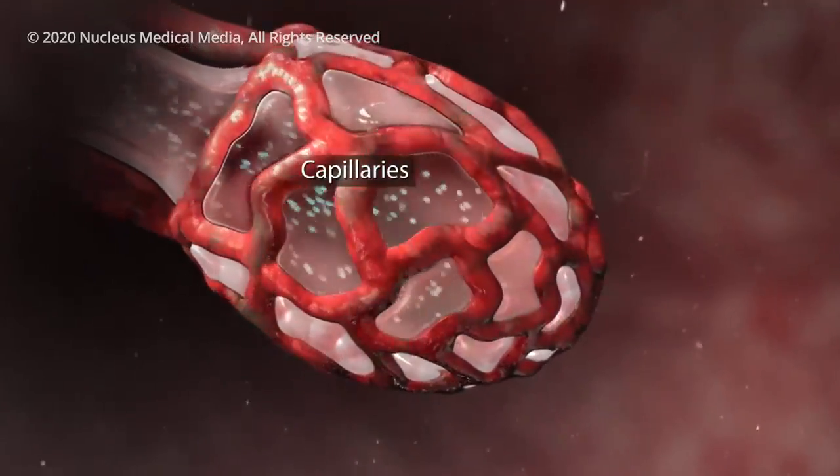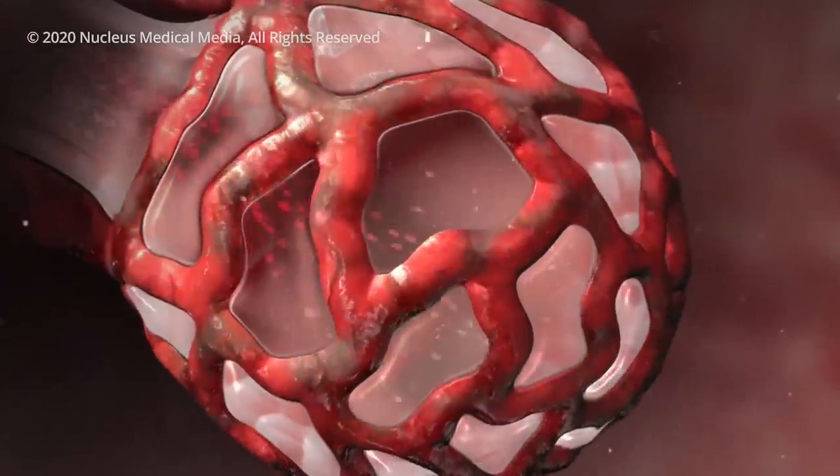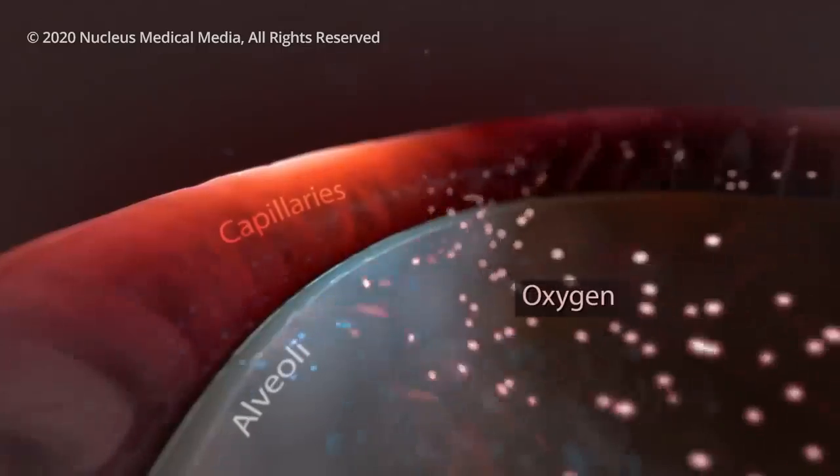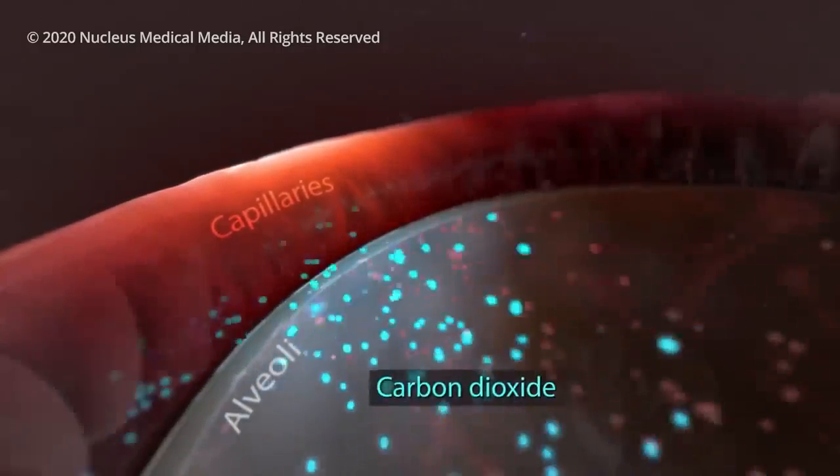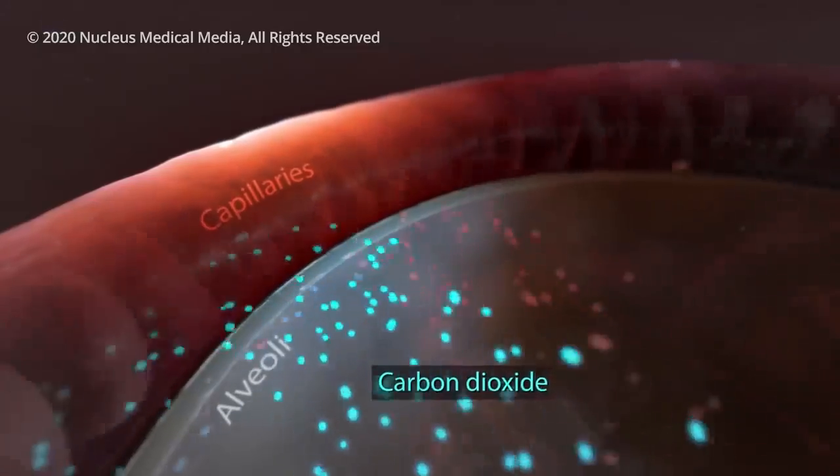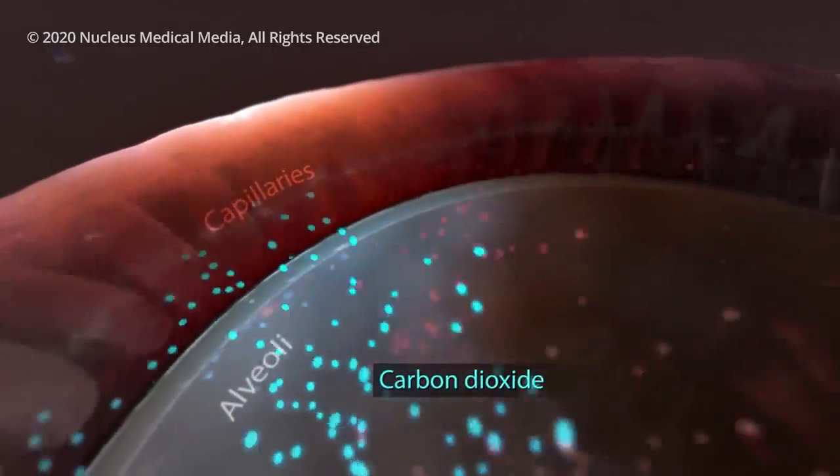Small blood vessels called capillaries surround your alveoli. Oxygen from the air you breathe passes into your capillaries, and then carbon dioxide from your body passes out of your capillaries, into your alveoli so that your lungs can get rid of it when you exhale.